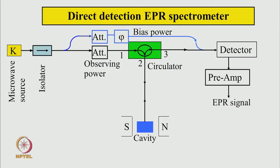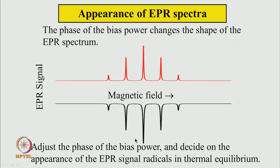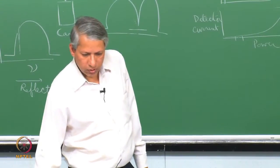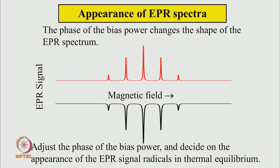So what we have got so far is called the direct detection EPR spectrometer. The detector signal generated by the detector is passed through a broadband preamplifier and we can get the EPR signal. To get the signal, I scan the magnetic field and record this output as a function of the magnetic field. The spectra will look like this — say some hypothetical radical gives a 5-line pattern. The appearance of this will depend on the bias power. If you change the phase of the reference power by 180 degrees, then the detector signal changes sign, and it can change from one orientation to the opposite.